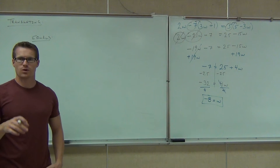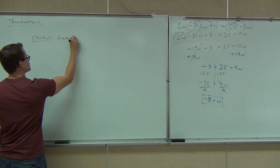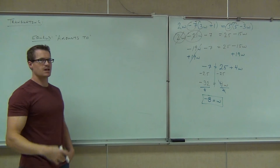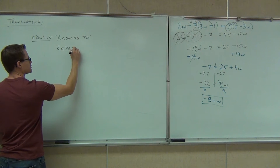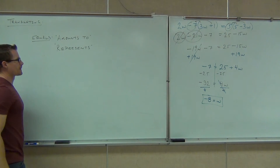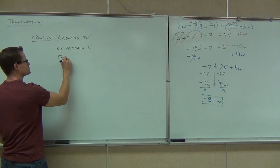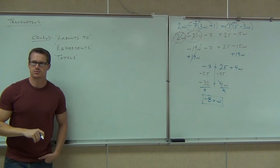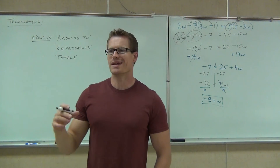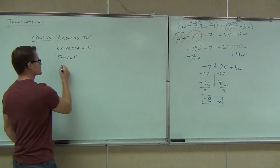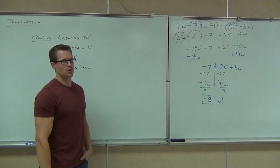The words that mean equals: first, 'amounts to' — something amounts to something means equals. We can also have 'represents' — represents means equals in a math sentence. And the one I use most is the word 'is,' or 'was' for past tense. Those are used a lot to mean equals.